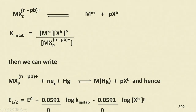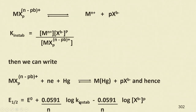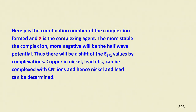A reduction potential can be written as: MX_p^(n-pb) plus n electrons, and in the presence of mercury it forms a metal amalgam and the ligand is freed. So E_half equals E°' minus (0.0591/n) × log(K_instability) minus (0.0591/n) × log([X^(b-)]^p), where p is the coordination number of the complex ion and x is the complexing agent.